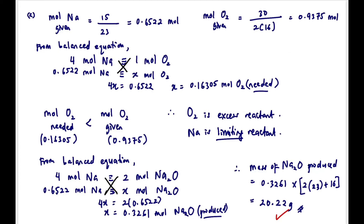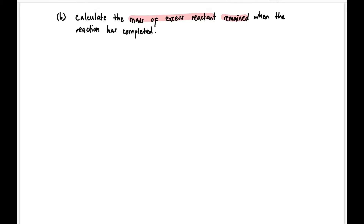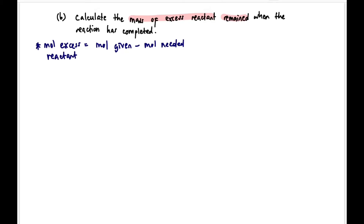Important note: even if the question doesn't ask for the limiting reactant, you still need to find it first before calculating the mass of product. Next, calculate the mass of excess reactant remaining. Mole of excess reactant remain = mole given minus mole needed.